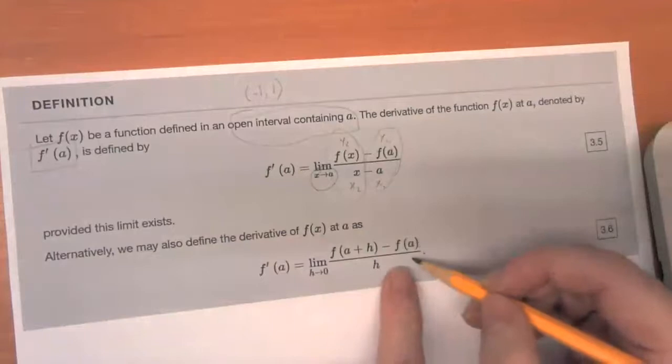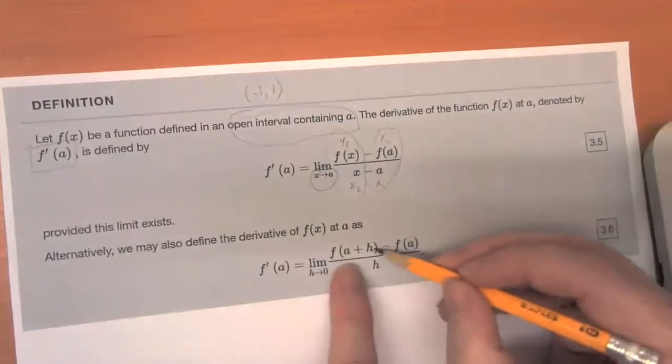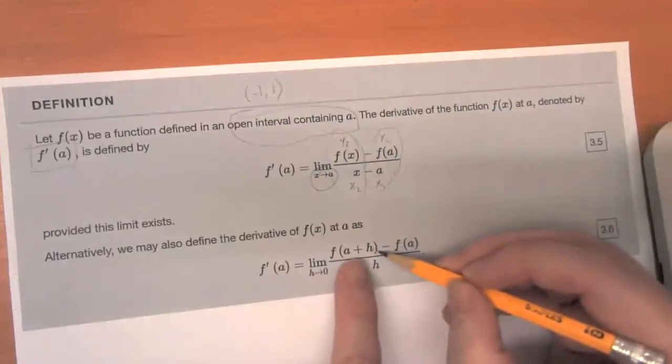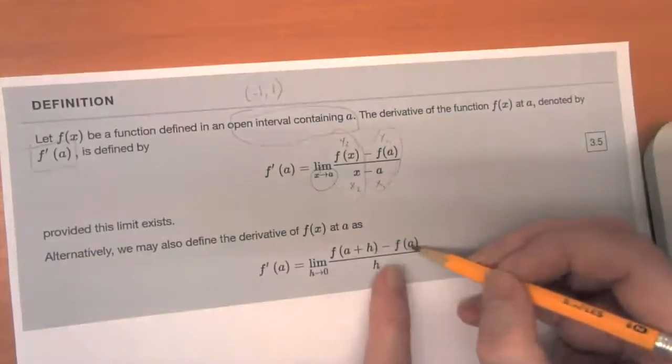We're really doing the same thing here. So here's our moving point. I'm sorry. Here's our fixed point F of A. And this time we want to talk about the moving point, not in terms of its X value, but in terms of how far away it is from A.